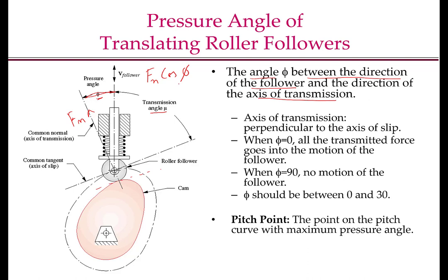When phi equals 90 degrees, there will be no force acting on the follower. As a practical thumb rule, the pressure angle should be between 0 and 30 degrees. The pressure angle depends on the contact point, so it changes as the cam moves. What we are interested in is the point where the pressure angle is maximum, because that limits the performance of the cam-follower system. This point on the pitch curve with maximum pressure angle is called the pitch point.